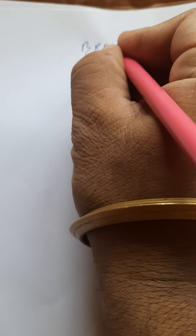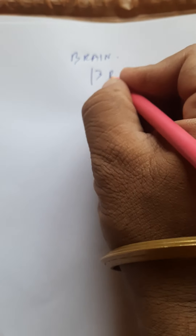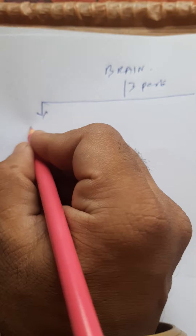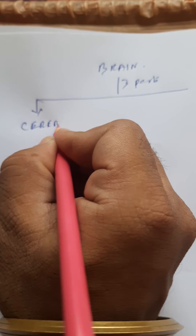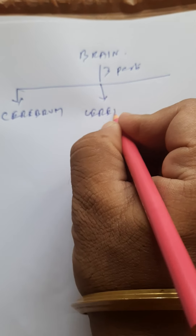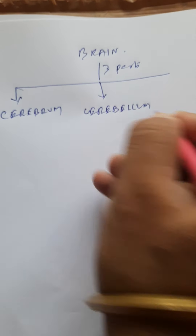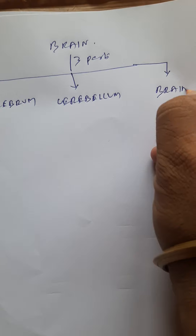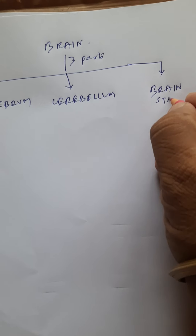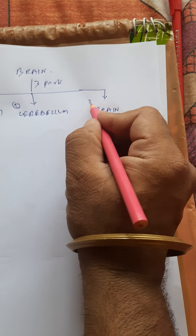From our previous session, we learned that the brain is broadly classified into three parts: cerebrum, cerebellum, and brainstem. Number one is cerebrum, number two is cerebellum, and number three is brainstem.